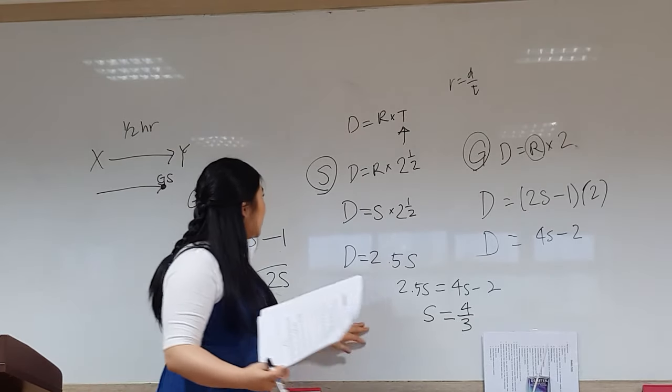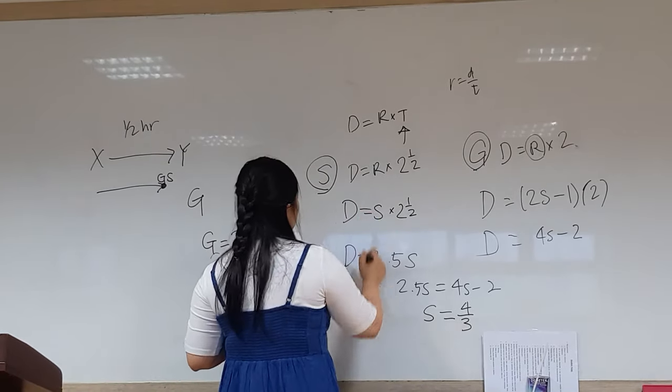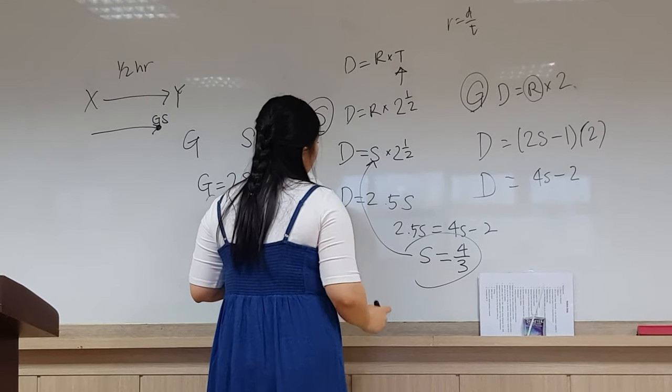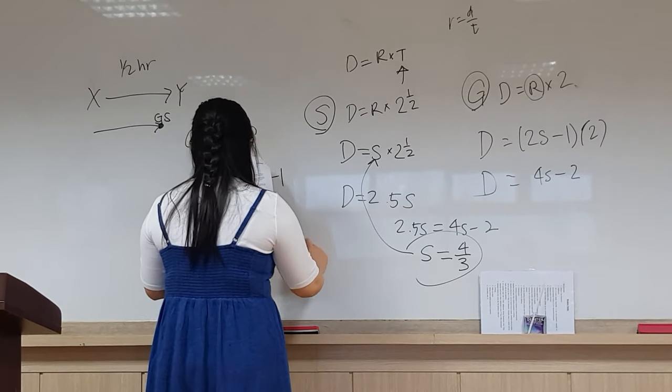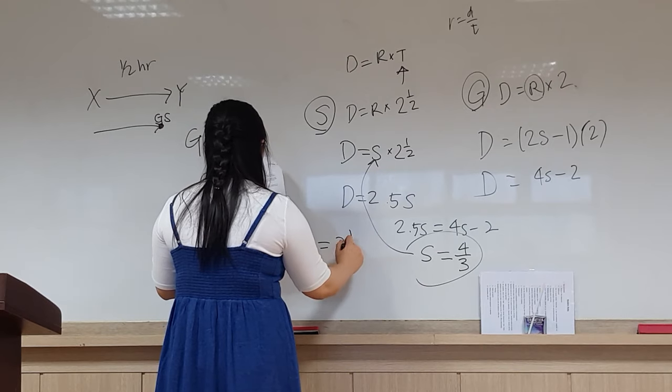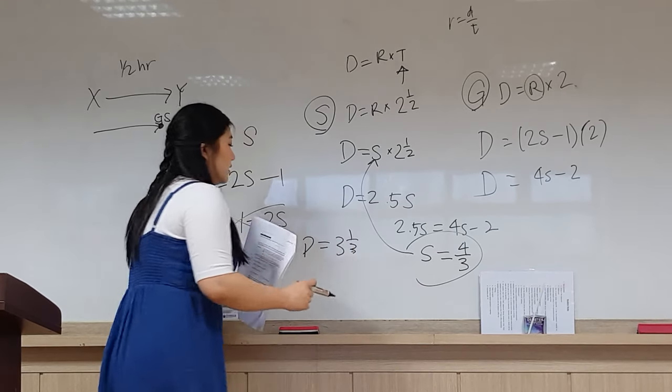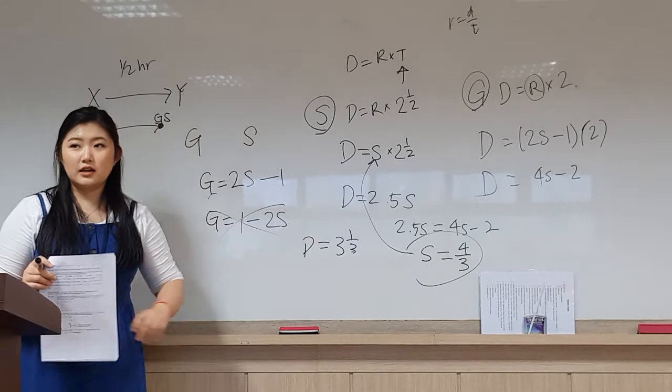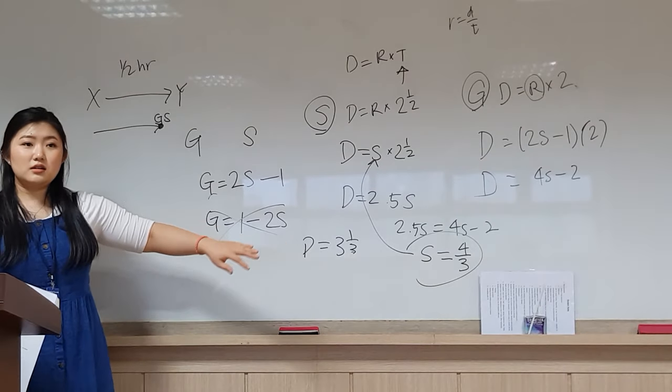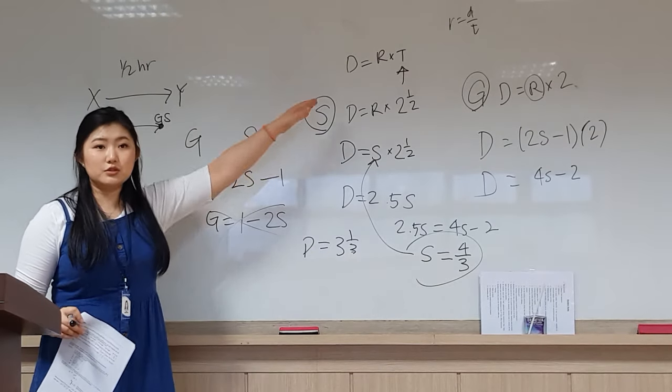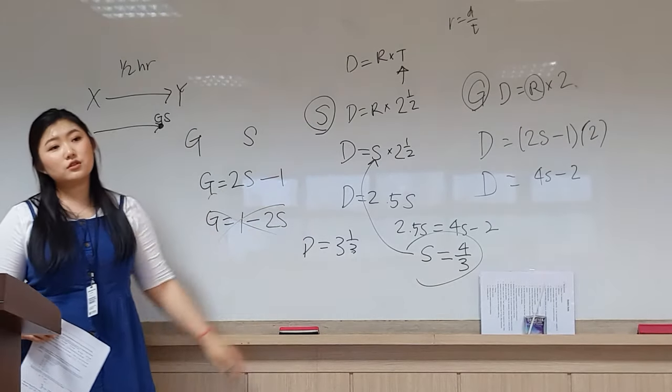So if we put it back into Scott's, the distance, we put this back into here. Your distance then should be 3 and 1 third of a mile. I'm just writing that straight up because I figured you guys could do the math once you plug it in there. But that's what your answer should be.